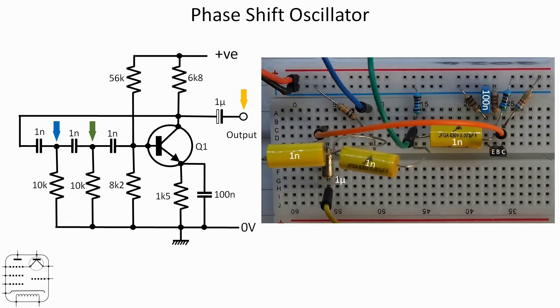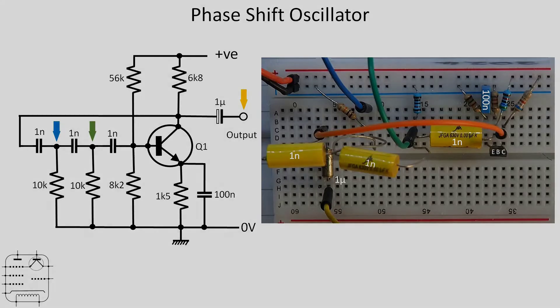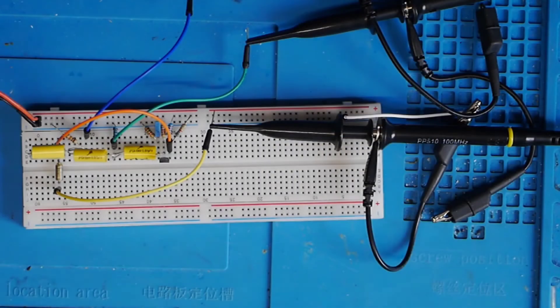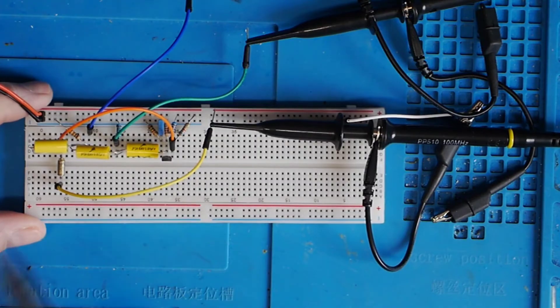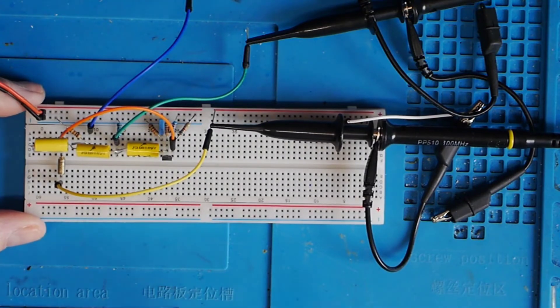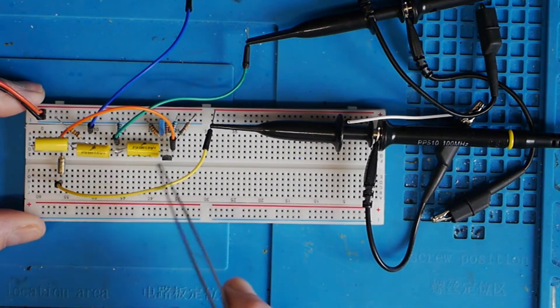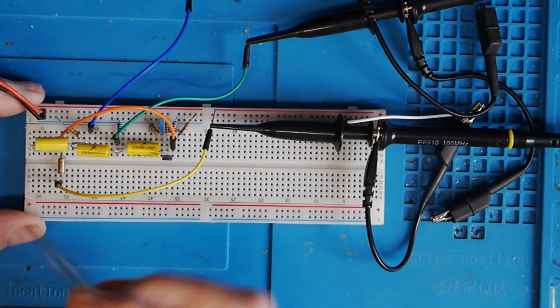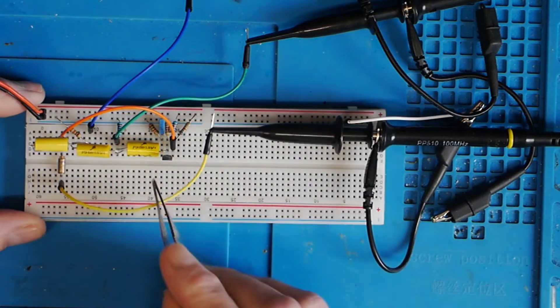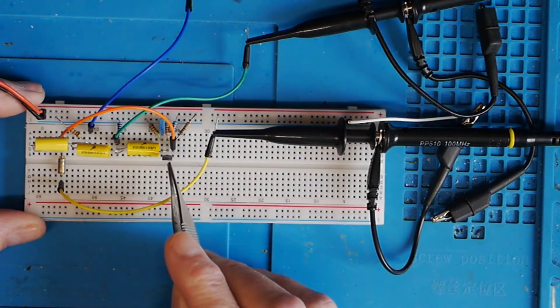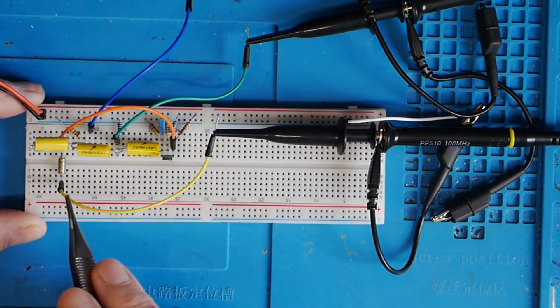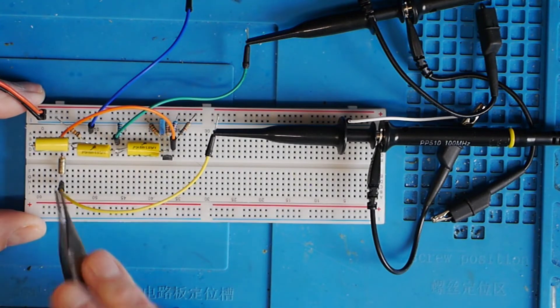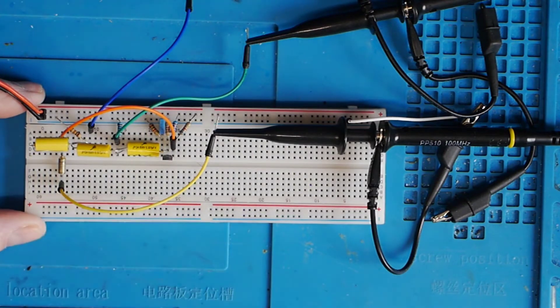That's all the theory. Let's go and have a look at it on the bench. So here we are with the breadboard set up. Not a great deal to see other than the picture. Here are the three phase changing capacitors, there's the transistor there, it's just a general purpose NPN as I said.